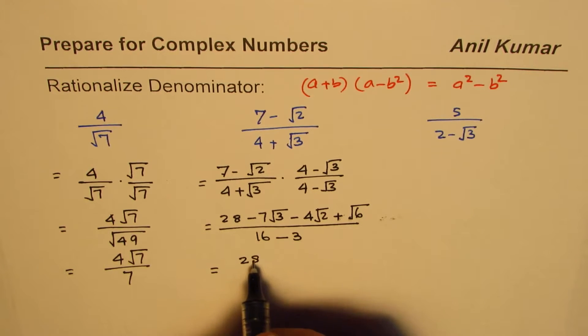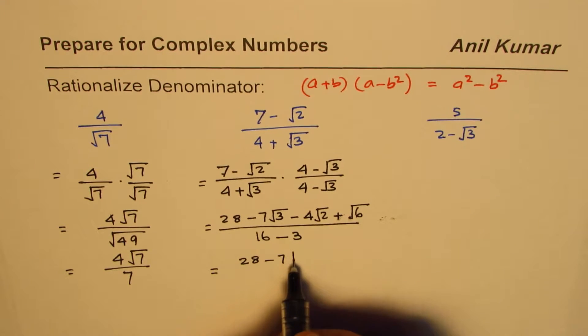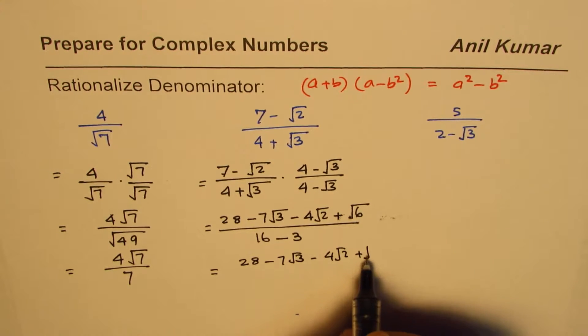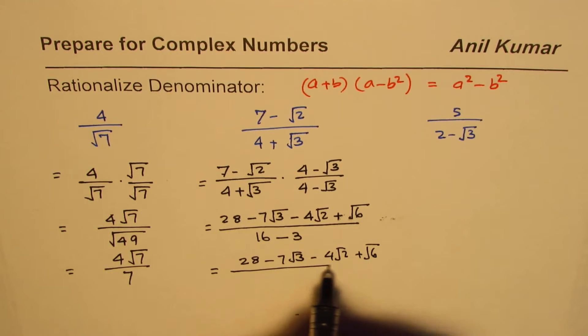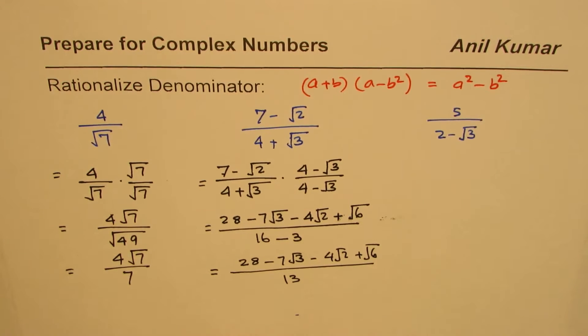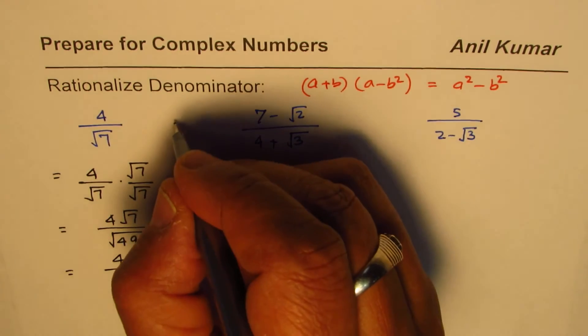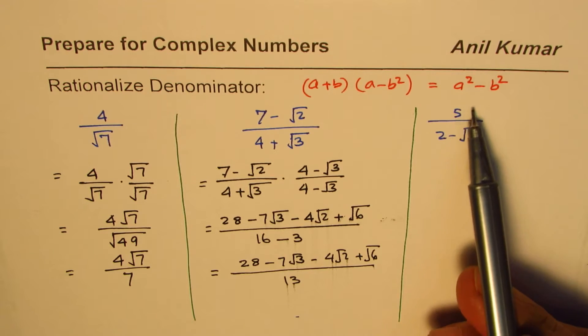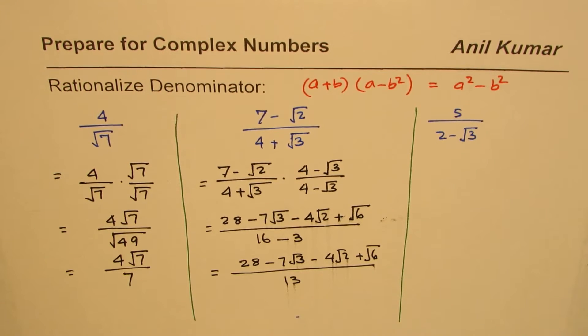In the numerator you write what you have: 28 minus 7 square root 3 minus 4 square root 2 plus square root 6. And the denominator is simpler: 16 minus 3, which is 13. That is how you could rationalize. So I hope this strategy of rationalizing is absolutely clear to you.